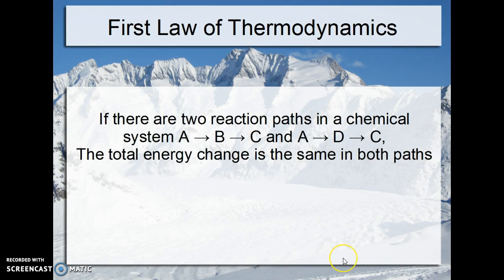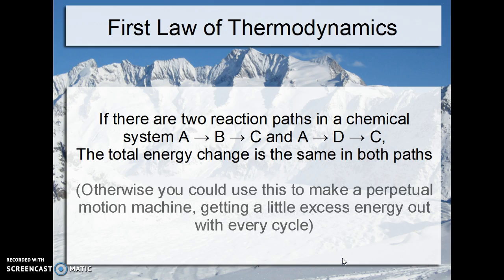If there are two reaction paths in a chemical system — A goes to B which goes to C, and the other A goes to D which goes to C — the first law tells us that the total energy change will be exactly the same in both paths. Otherwise, you could find the one that gives the most heat and do that first, then reverse the other one, and with each cycle of this you would get out a little bit of heat. And that's a perpetual motion machine, which of course violates the first law.